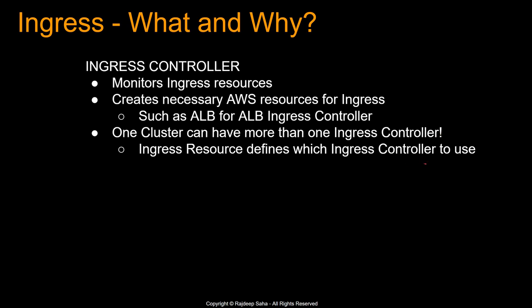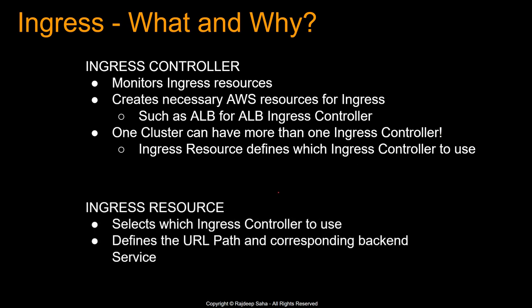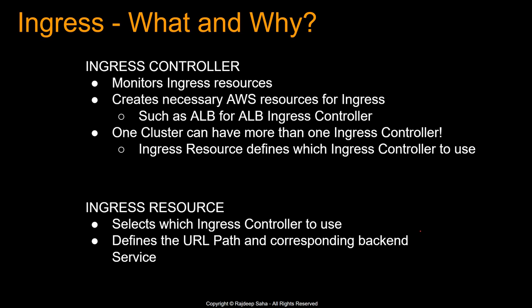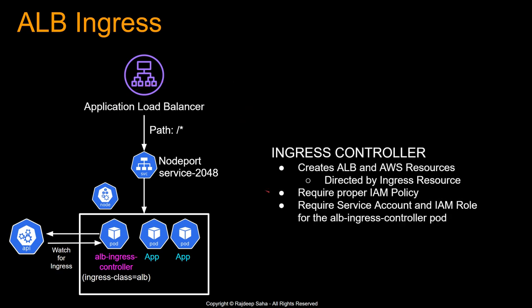The ingress resource defines which ingress controller to use, the URL path, and the corresponding back-end service. From an access policy perspective, the ALB ingress controller is actually creating AWS resources on your behalf — in this case, the application load balancer. That means it requires a proper IAM policy: this pod needs to have the IAM policy that allows it to create AWS resources. It also requires a service account and an IAM role with that IAM policy for the ALB ingress controller pod. This is not needed for regular deployments, but it is required here.